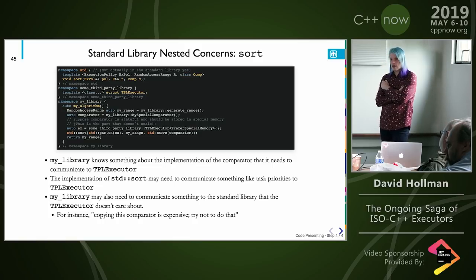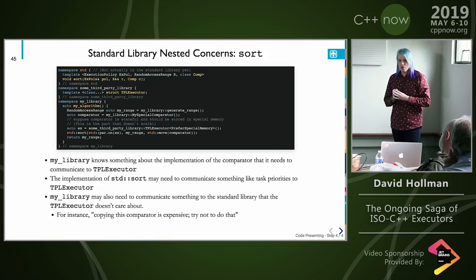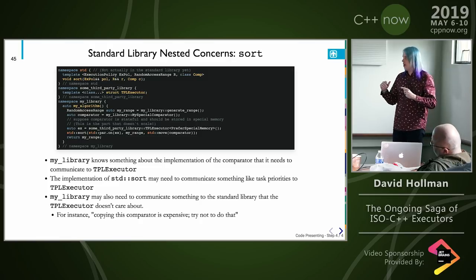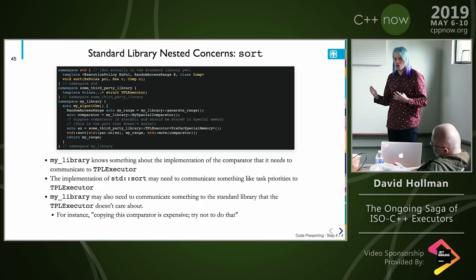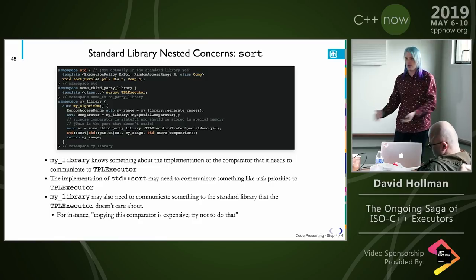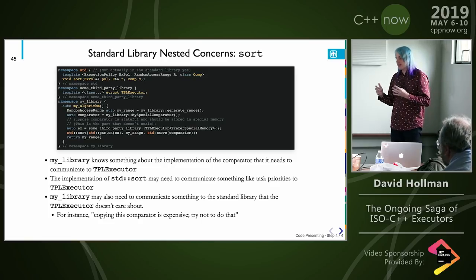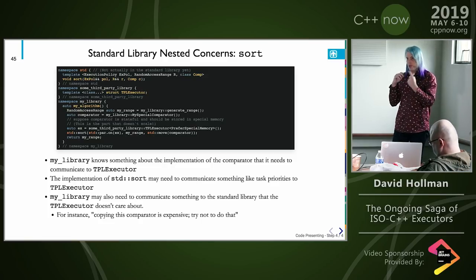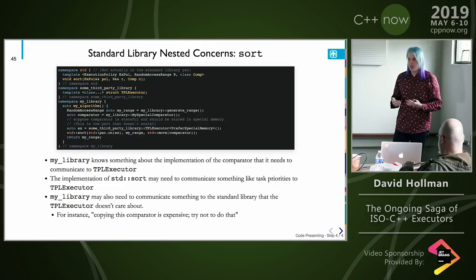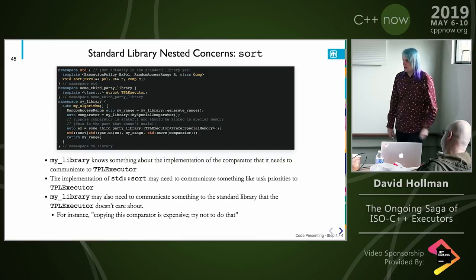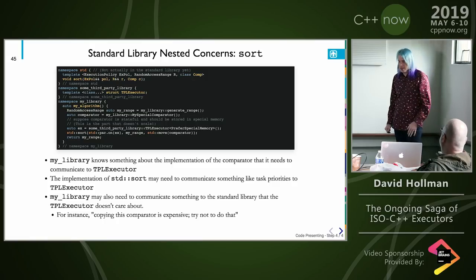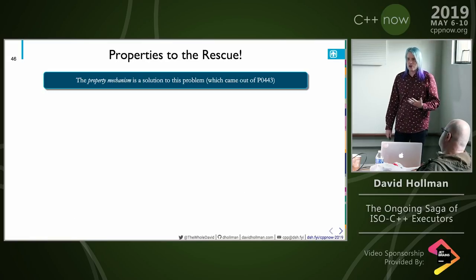There are three parties, and they all have pairwise communication concerns that would be essentially non-starters if they couldn't be expressed — you'd end up writing your own instead. But adding that complexity for the third party in each of the pairwise cases would introduce sufficient cognitive load that it would be infeasible to scalably implement all of those different libraries.